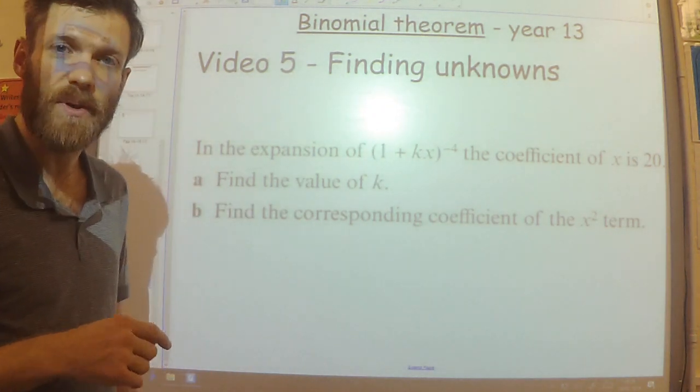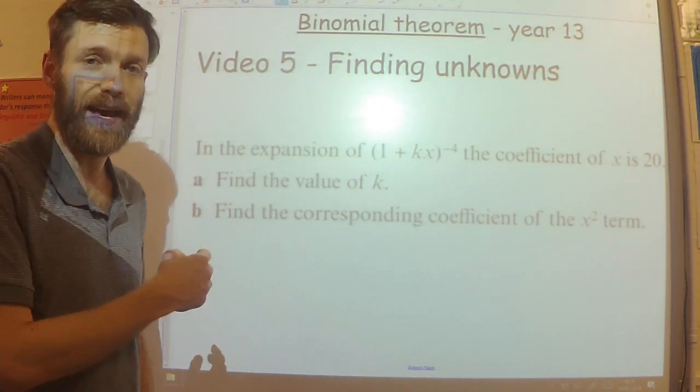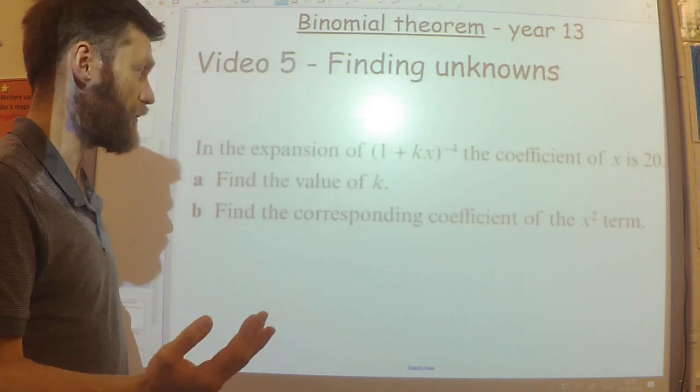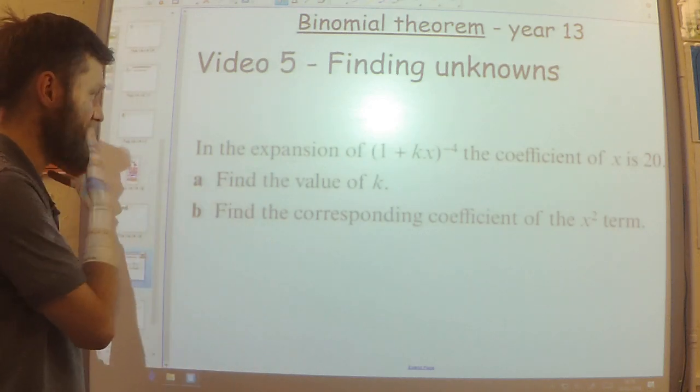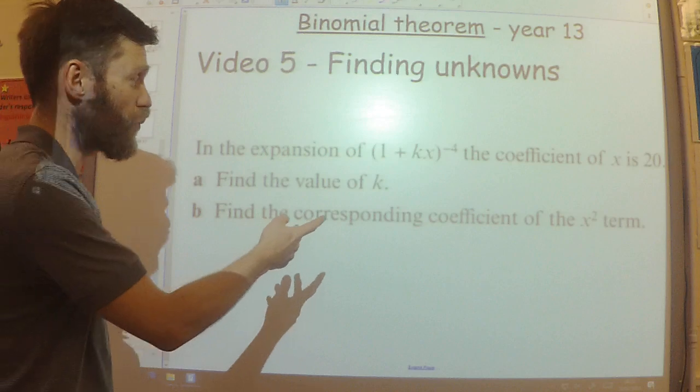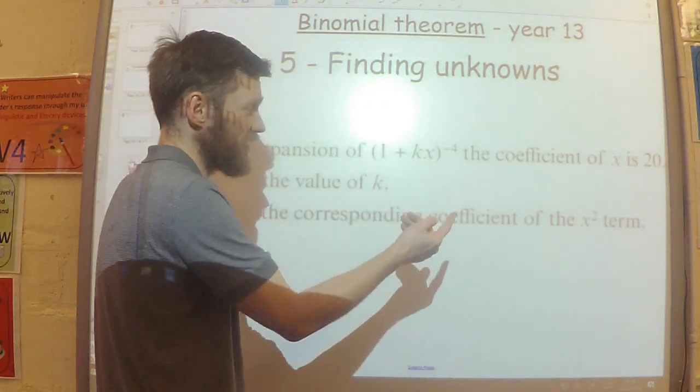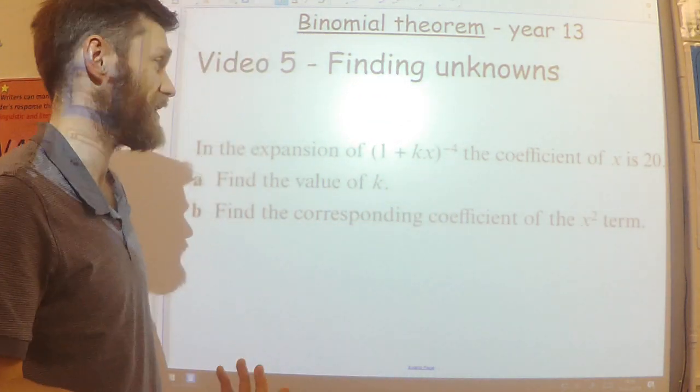This is video 5 on the binomial expansion, where we're going to have a look at finding additional unknowns. In this question here, in the expansion of (1 + kx) to the power of minus 4, the coefficient of x is 20.